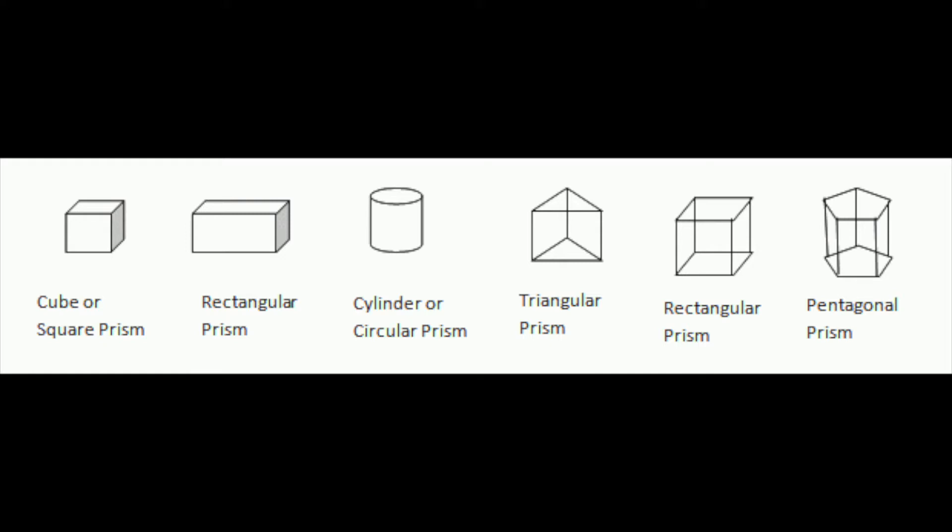We're going to start talking about prisms, and prisms are when you have two congruent parallel bases that are polygons that are connected by quadrilaterals.